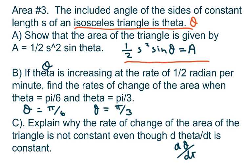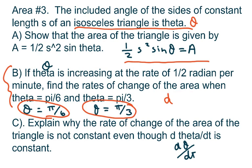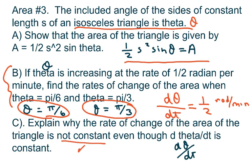After that, we're going to plug in pi over 6 for theta and pi over 3 for theta, and the derivative of theta with respect to time is going to be one half radians per minute. Then we're going to explain why the area's rate of change is not constant, even though the derivative of theta with respect to t is constant.